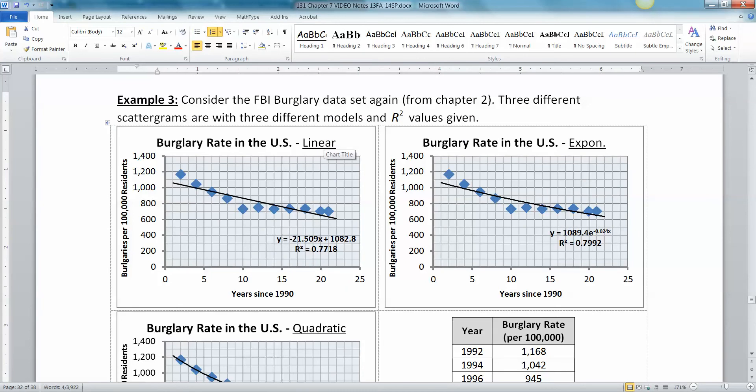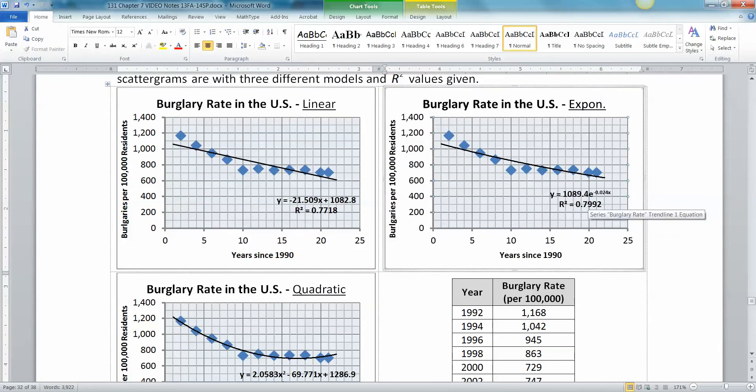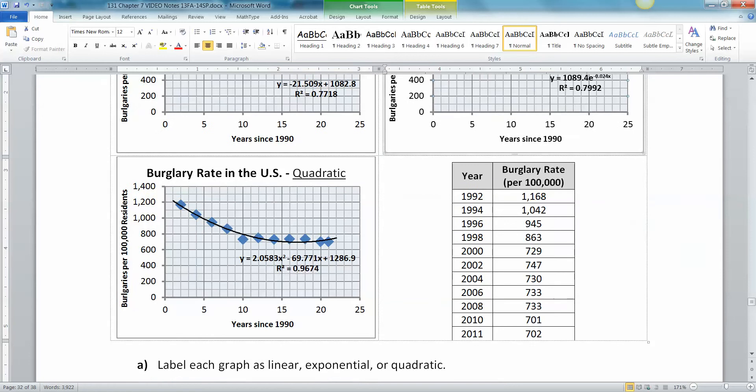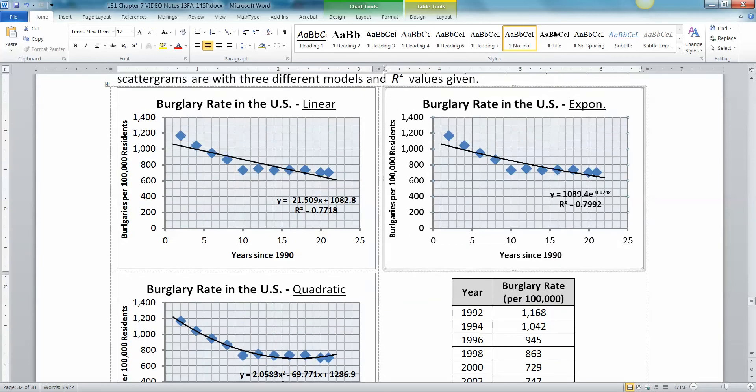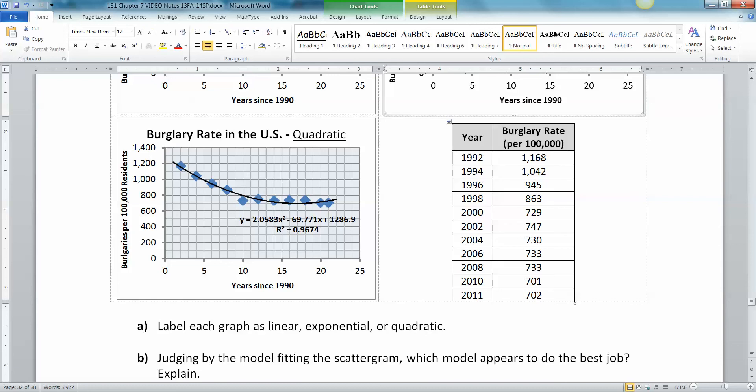You can see I've already done that. Up here is the linear graph with mx plus b and its R squared value. Over here is the exponential curve with x in the exponent. It uses Euler's number e. Then the quadratic with the ax squared plus bx plus c model. You can see the three different R squared values, and there was the data right there from chapter 2.